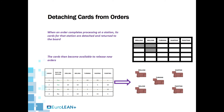That is how COBACABANA monitors the workload on the shop floor through a centralized planning board. As orders complete processing at the workstations in their routing, the cards that were originally attached to them are detached and sent back to the planning board so that they can be used to release new orders. For example, as order 1 completes drilling, one card is detached and sent to the planning board, and as it completes turning, the two cards for turning are detached and sent back.